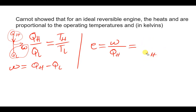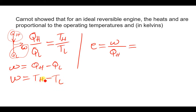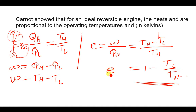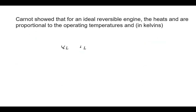To derive the Carnot efficiency formula: since the energies are proportional to the temperatures, we replace Q_H with T_H and Q_L with T_L. So work becomes T_H minus T_L, divided by T_H, which simplifies to one minus T_L over T_H. This is the Carnot efficiency formula.